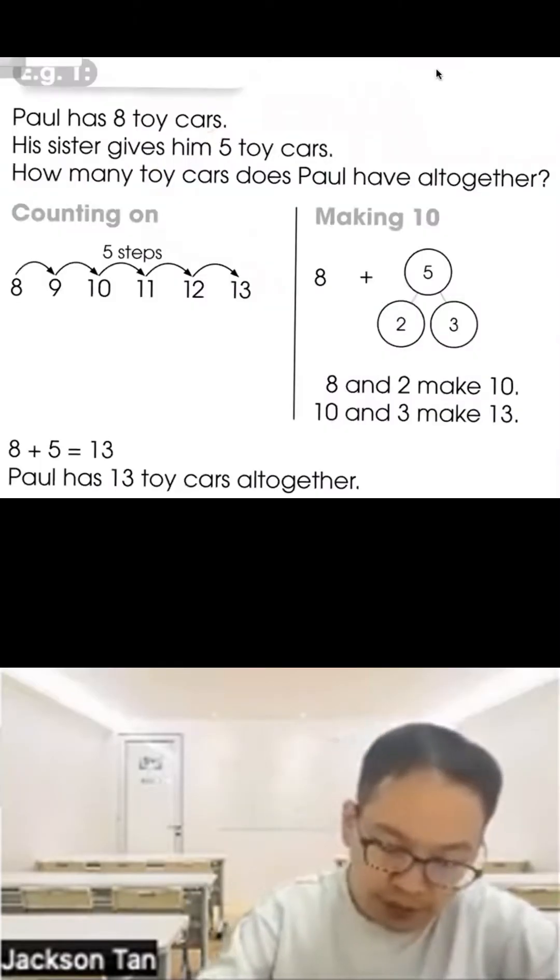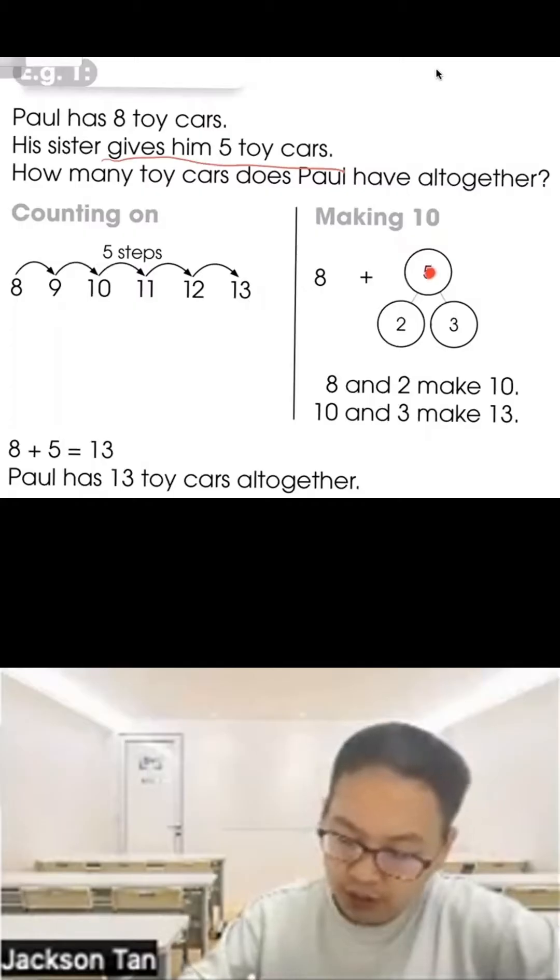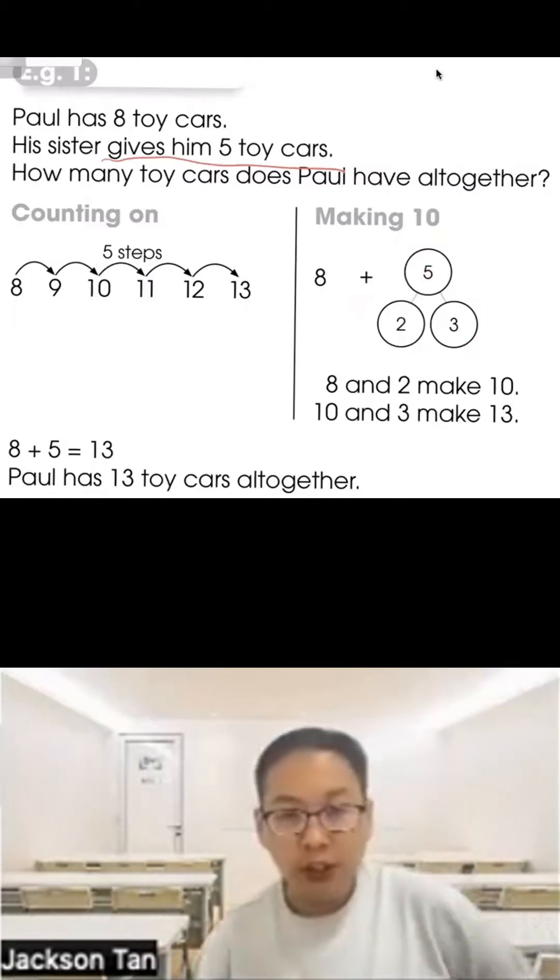Paul has 8 toy cars. His sister gives him 5 toy cars. How many toy cars does Paul have altogether? Starting from 8, we count on 5: 9, 10, 11, 12, 13. Another way is making 10: 8 plus 5, where 5 can be split into 2 and 3. 8 and 2 make 10, with 3 making 13. Paul has 13 toy cars altogether.